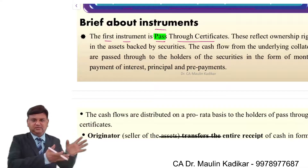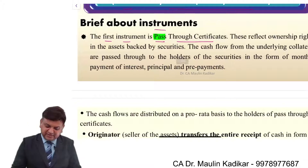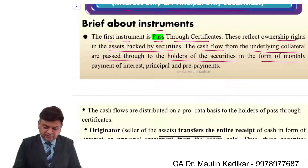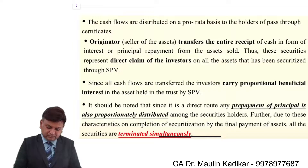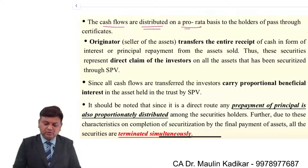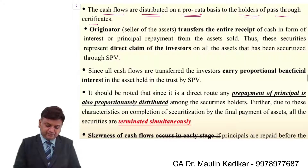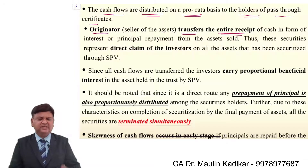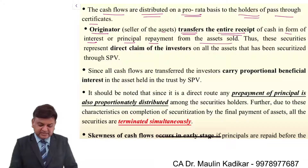The pass-through certificate reflects the ownership right in the asset-backed securities. The cash flows from the underlying collateral are passed through to holders of the security in the form of monthly payments of interest, principal, and prepayments. Cash flows are distributed on a pro-rata basis to the holders of pass-through certificates. The originator, as the seller of the assets, transfers the entire receipt of cash in the form of interest and principal payment from the assets sold.